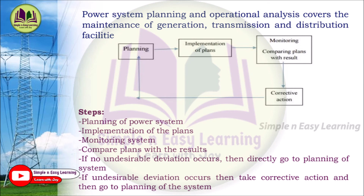The steps are: first, planning the power system; then implementation of the plants; monitoring the system; and comparing plans with results. If no undesirable deviation occurs, we directly go back to planning the system. If an undesirable deviation occurs, we take corrective action and then go to planning the system. Corrective action is necessary only if there is a deviation; otherwise, we can directly proceed to planning from monitoring.